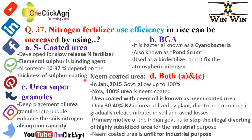Blue-green algae is a bacterium, also known as cyanobacteria, and sometimes called pond scum by scientists. It is used as a bio-fertilizer and fixes atmospheric nitrogen. Urea super granules involve deep placement of urea granules into the puddled soil, enhancing soil nitrogen absorption capacity. Neem-coated urea was initiated in January 2015 by the Government of India, allowing up to 100 percent neem-coated urea to manufacturers.